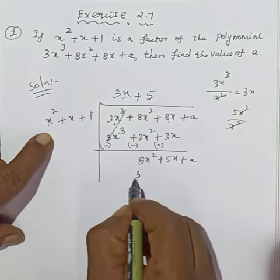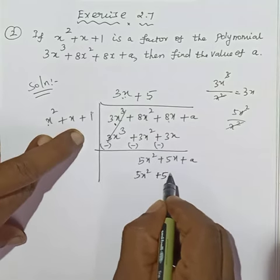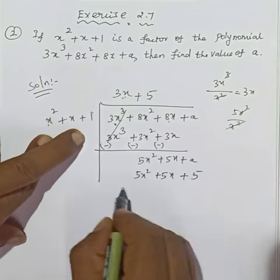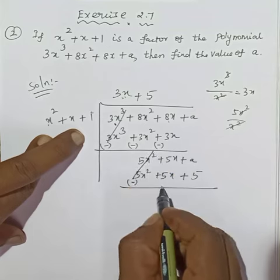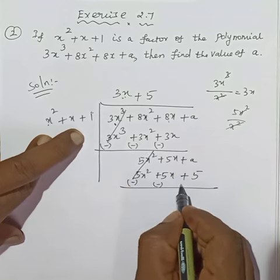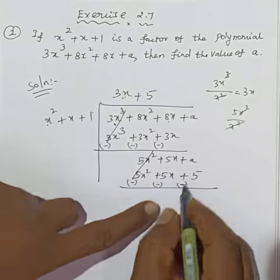5x squared divided by x squared is 5. So 5 times x squared is 5x squared, 5 times x is 5x, 5 times 1 is 5. Again sign change, cancel terms, this sign changes and this sign changes, so that is also cancelled.